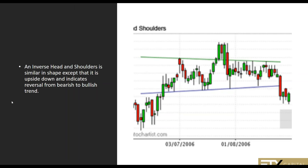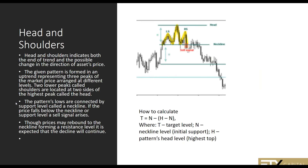We also have the inverse head and shoulders, which is just the exact opposite — a flip of the normal head and shoulders. Head and shoulders has a calculation you can use: your sell point would be exactly as it breaks the neckline in the final formation of the right shoulder. You have the beginnings of an up movement that forms the left shoulder, comes back down and establishes the neckline, forms the head, comes back down to the neckline, forms the right shoulder, comes back down to the neckline, and breaks through. When it breaks through is your sell opportunity.